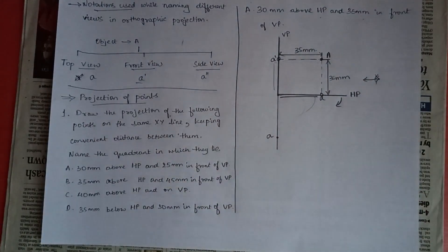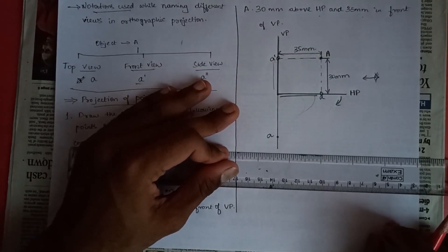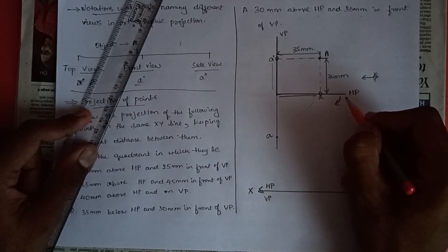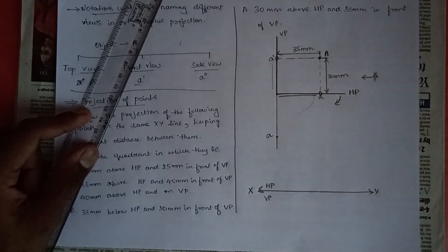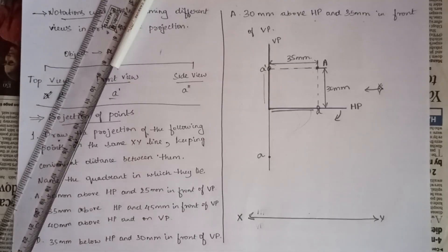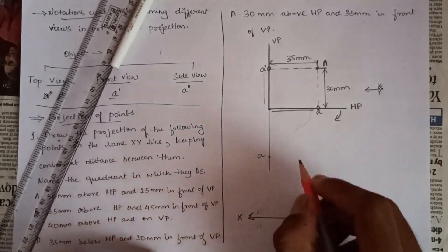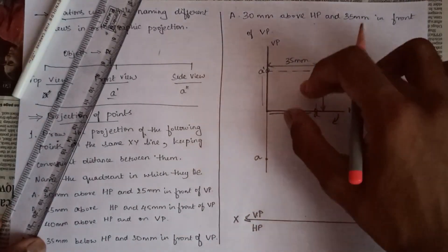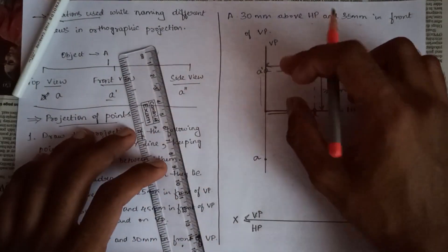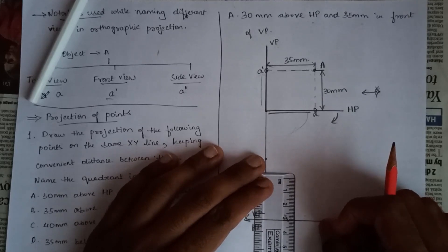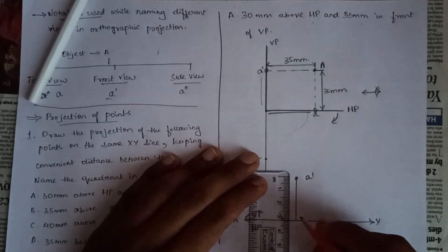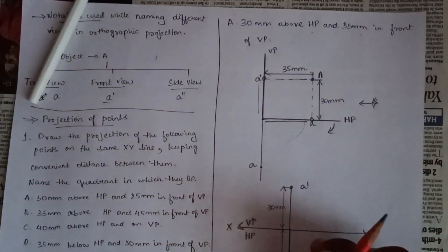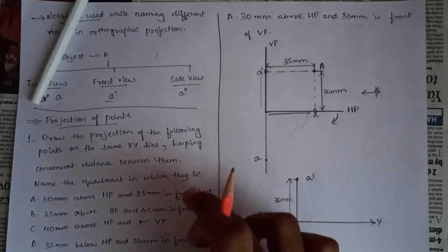Now we must represent this on a straight XY line — always remember to label it. Draw the XY line and label VP above and HP below. A-bar is 30 mm above the XY line — take 3 centimeters above the line and label it as A-bar, marking the distance 30 mm. Point A is 35 mm below the XY line — mark it there. This is the required solution for point A.